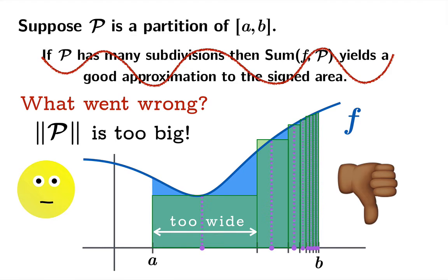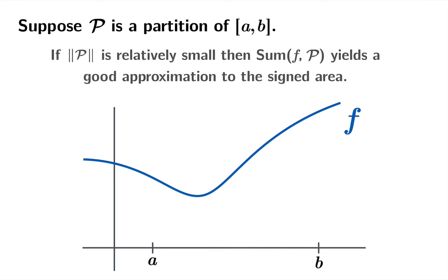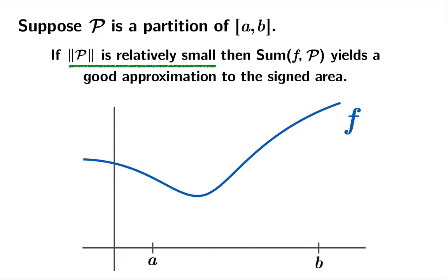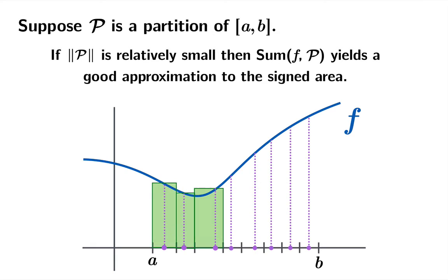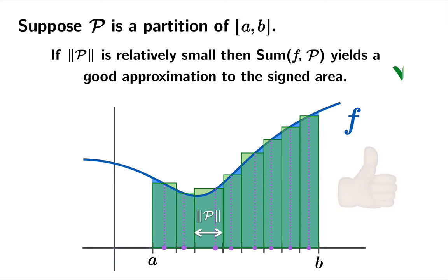So it's not just how many subdivisions you have. Really the way to think about it is as long as the partition size is relatively small then your Riemann sum should yield a good approximation. So in this example we've got a smaller partition size because the widest interval is not nearly as wide as in the last example. And if you just compare the green area to the blue area under the curve you can see because of the cancellation above and below this has got to be a much better approximation to the actual area.